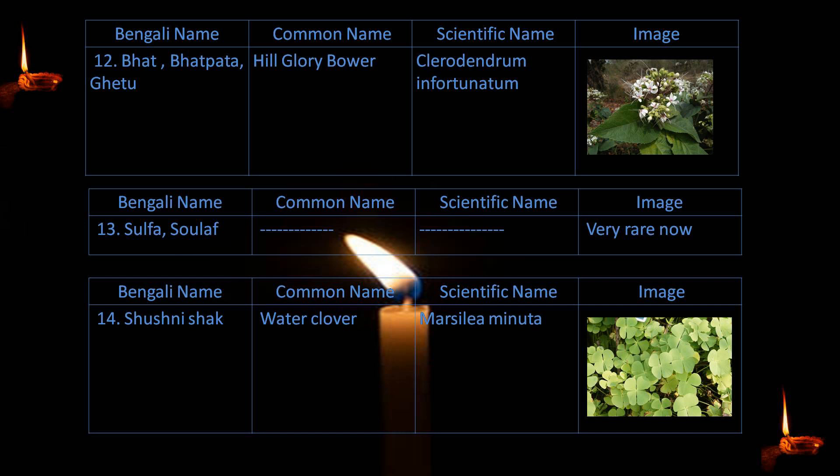12. Bhaat pata, also known as Ghetu pata — hill glory bower — Clerodendrum infortunatum.